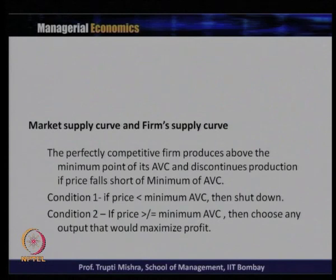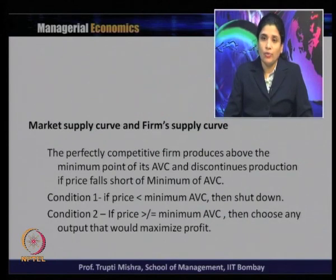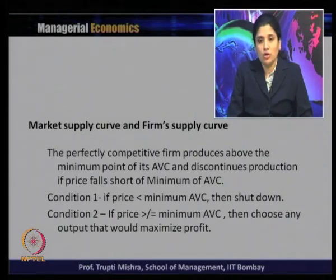Starting with short-run market supply: if the price goes below the minimum of AVC, the firm generally shuts down operations. That is the starting point for analyzing the short-run supply function in a perfectly competitive market. The perfectly competitive firm produces above the minimum point of AVC because any output level below that means the firm cannot even cover its variable costs, and it discontinues production if price falls short of the minimum of AVC.